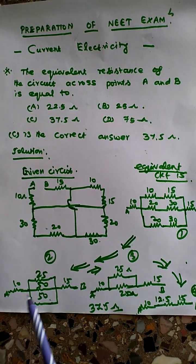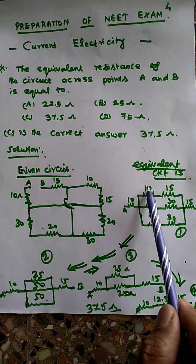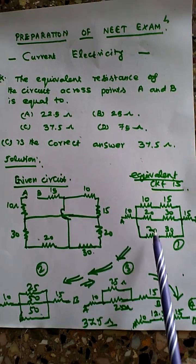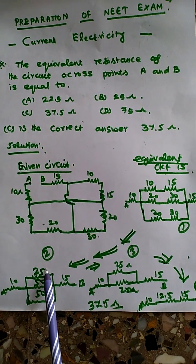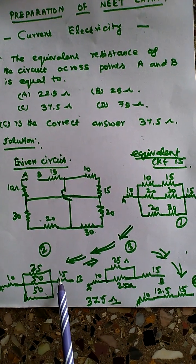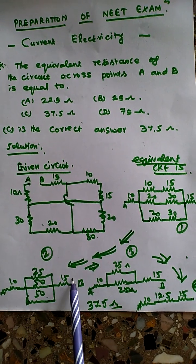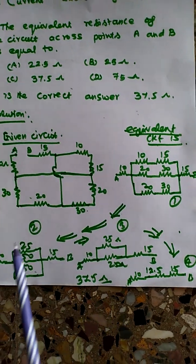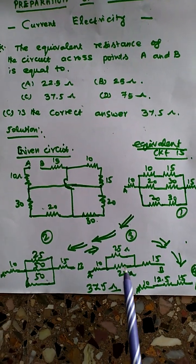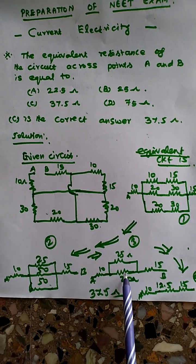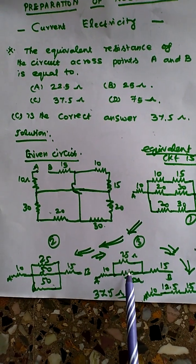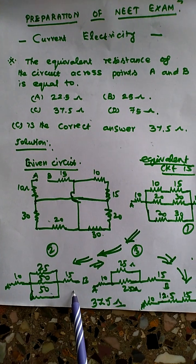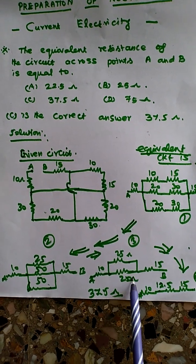The modified circuit now goes from A through 10 ohms. The three branches in parallel are: 25 ohms, 50 ohms, and 50 ohms. Using the parallel formula R1×R2 divided by R1+R2, the two 50 ohm resistors in parallel give 50×50 divided by 50+50, which equals 25 ohms.